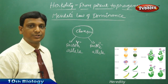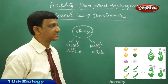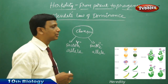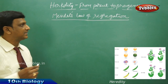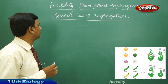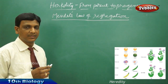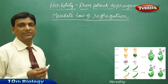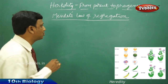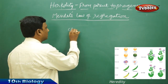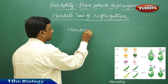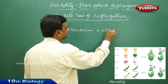The dominant factor is expressed, and this is called Mendel's Law of Dominance. Now let us see the Law of Segregation by Mendel. Every individual organism has two alleles for a character — for one character there are two alleles.